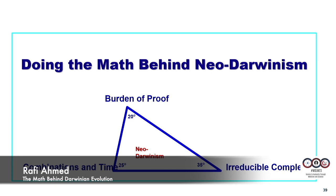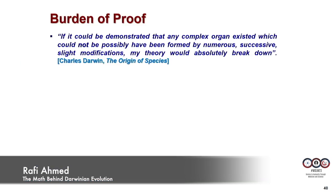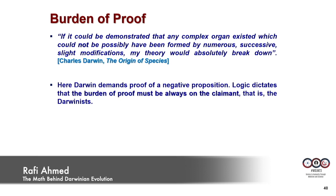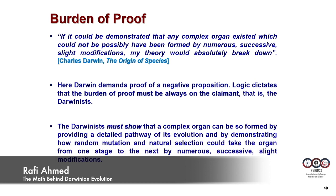On burden of proof — this is what Darwin wrote. He is essentially asking for proof of a negative proposition. But logic dictates that the burden of proof must be on the claimant. So what do they have to prove? They have to show that there exists at least one organ, one species, and provide its pathway, showing how it went from one stage to another using what Darwin described as numerous successive slight modifications.